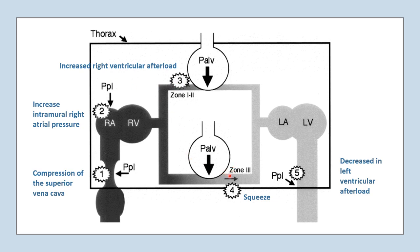In West zone 3, this increased alveolar pressure will squeeze out the blood in the capillaries to the left side, increasing the preload on the left side. And finally, the increased intra-alveolar pressure will compress on the intrathoracic vessels as compared to the extrathoracic vessels, causing decreased left ventricular afterload.